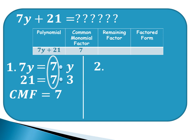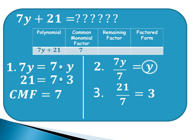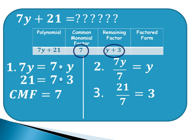To get the remaining factor, we divide each term by the CMF. First, we divide 7y by 7, which equals y. Next, 21 divided by 7 is 3. The remaining factor comes from y and 3, giving us y plus 3. The factored form comes from the common monomial factor and the remaining factor, giving us 7 times the quantity y plus 3.